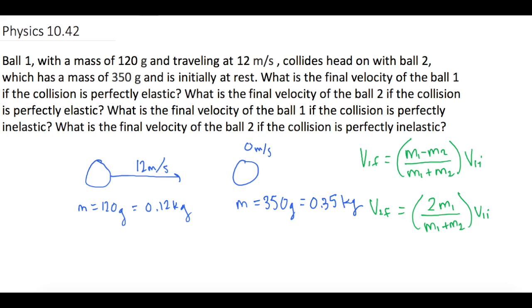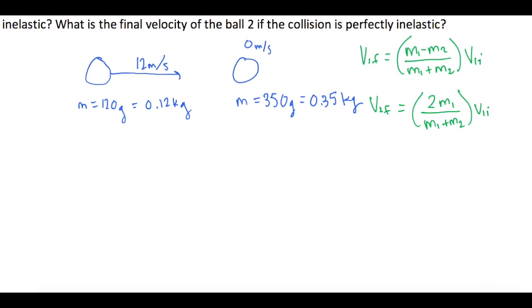Let's look at this. We have everything, so now we just plug everything in. V1 final equals m1, which is 0.12, minus m2, which is 0.35, divided by 0.12 plus 0.35, times the initial speed of ball 1, which is 12 meters per second.